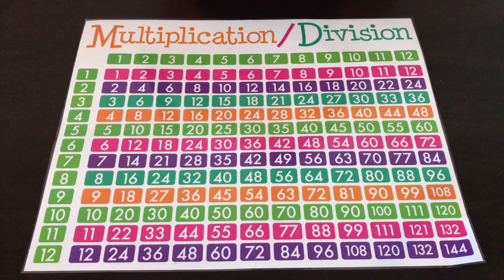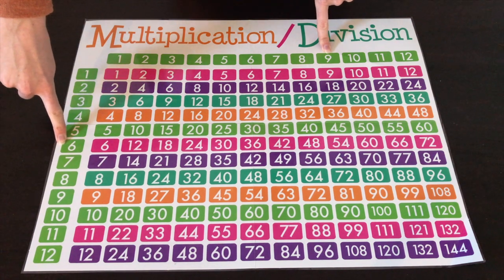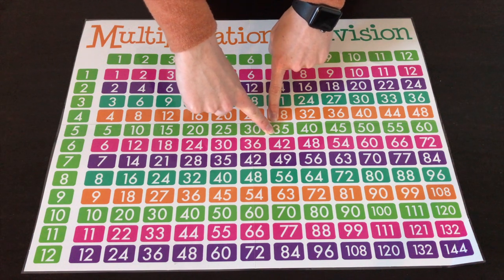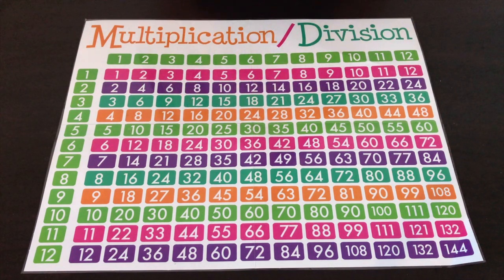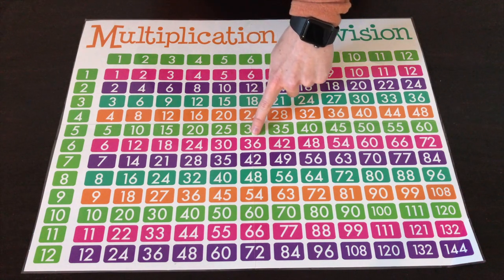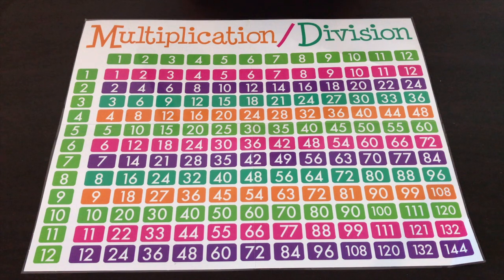One issue I run into in my classroom quite often is human error with a multiplication chart. If a student is working on 9 times 6, they start in the right places, but as they start to slide, their fingers often go in the wrong direction — diagonally one way or another — and they end up with the wrong answer. The same happens with division: working on 45 divided by 5, a student puts their finger on the 5 and starts to slide down, but may go in the wrong direction and have difficulty finding the 45.